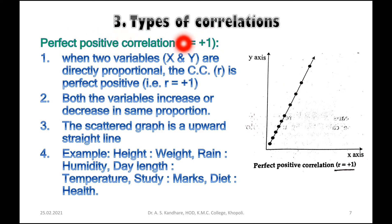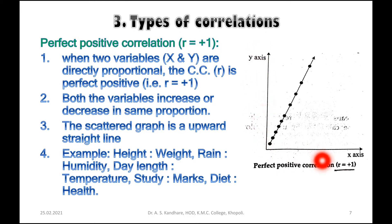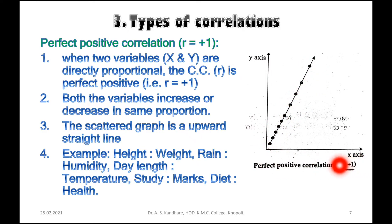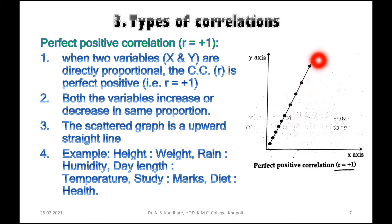Here is the scatter graph of perfect positive correlation, that is r equals plus one. There are two variables: x variable on the x-axis and y variable on the y-axis. When r is equal to plus one, the values of these two variables — x and y — fall on a straight line.